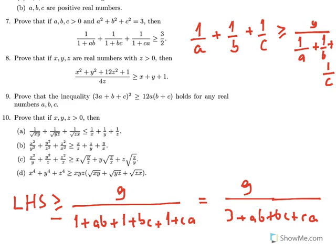We have 9/(3 + ab + bc + ca). Now we know that this is less than or equal to 3.